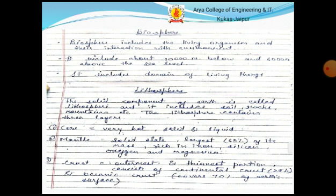The last one is lithosphere. The solid components of the Earth are called the lithosphere, and it includes soil, rocks, mountains, etc. The lithosphere contains three layers. First, core — very high temperature. Second, mantle — solid state, comprising about 68% of its mass, rich in iron, silicon, oxygen, and magnesium. Third, crust — the outermost and thinnest portion, consisting of continental crust at 29% and ocean crust covering 70% of Earth's surface.